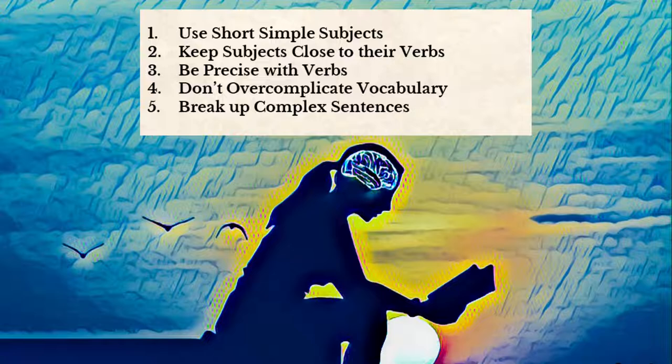Fourth, don't overcomplicate vocabulary. Try to use verbiage that's appropriate but not unnecessarily complex. In many cases, especially in academic or professional writing, you'll need to use some specialized vocabulary, but consider where and when you can reduce this complexity to give your reader a break. Fifth, break up complex sentences. You can always convert complicated sentences with complex ideas into multiple sentences rather than trying to cram too many ideas into a single sentence.